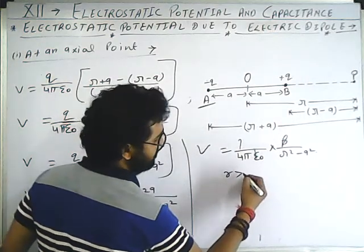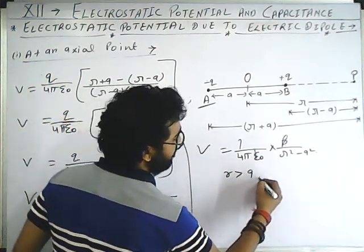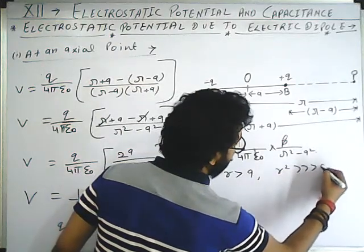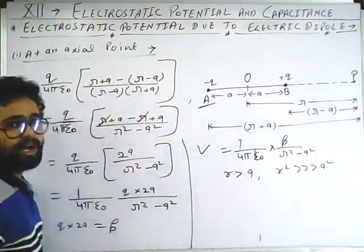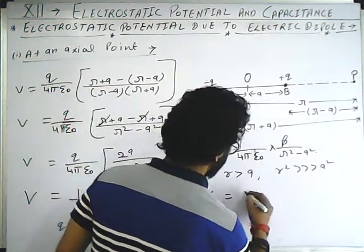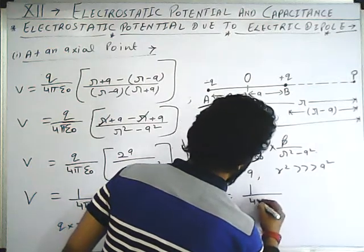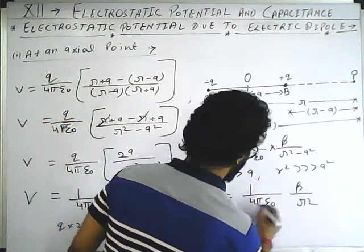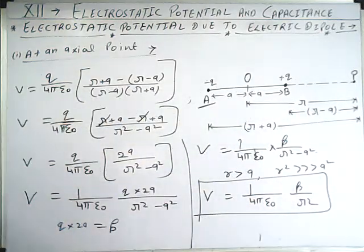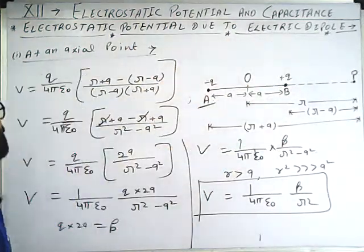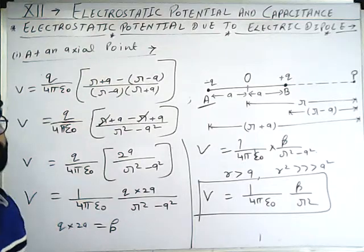Here, since R is greater than A, R squared is very much greater than A squared. That's why we can neglect A squared, and we get V equals one upon four pi epsilon naught, P upon R squared. That is the required formula for electrostatic potential due to electric dipole at an axial point.